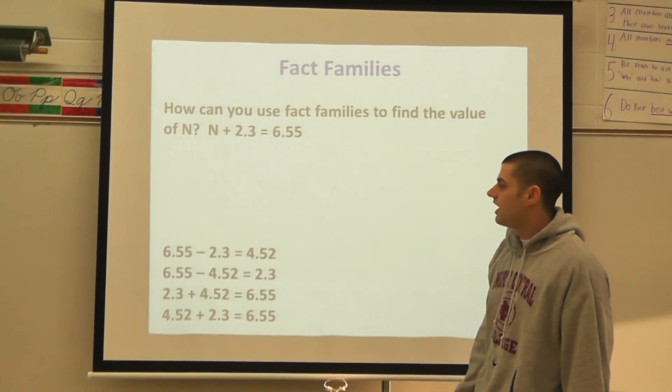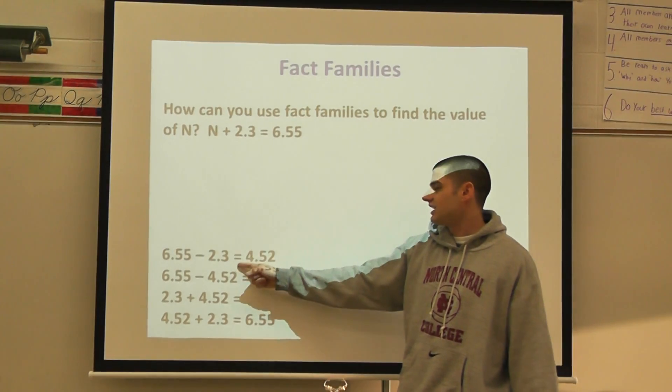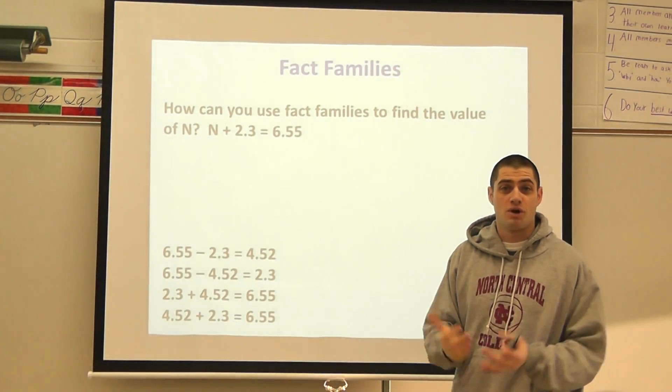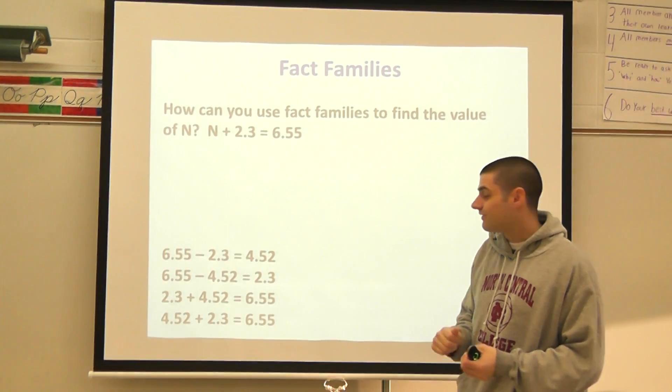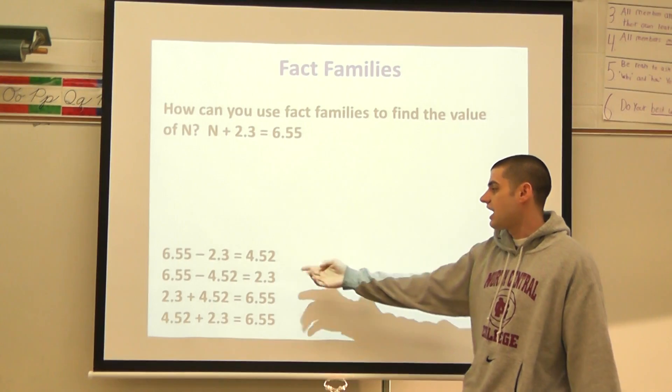I know that in a subtraction problem the biggest number goes in the front. So I can actually rewrite this problem as 6.55 minus 2.3 is going to equal N. I can type this right in my calculator, or if you got a handy dandy little smartphone, type it in your calculator, and it's going to equal 4.52, or 4 and 52 hundredths.